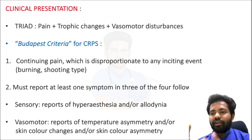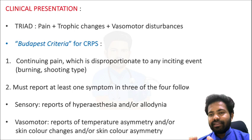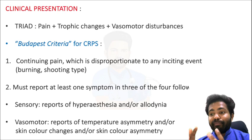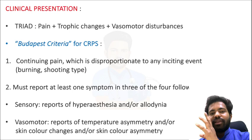The clinical presentation of CRPS usually involves a triad: pain, trophic changes, and vasomotor disturbances. The criteria for diagnosing CRPS are given by the Budapest criteria, which includes four main criteria. The first is continuous pain disproportionate to an inciting event — initially the person has pain only at the site of injury, but slowly the pain becomes a burning, shooting type that radiates to the arm and can spread further.